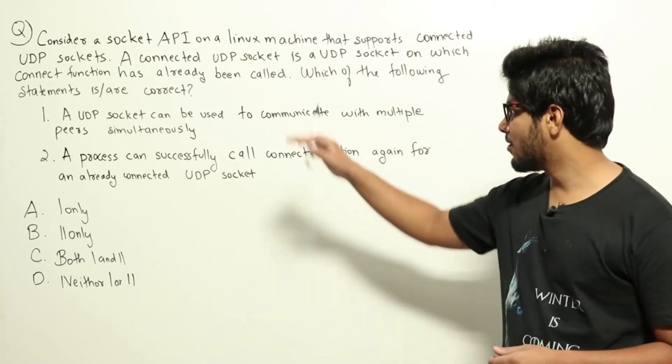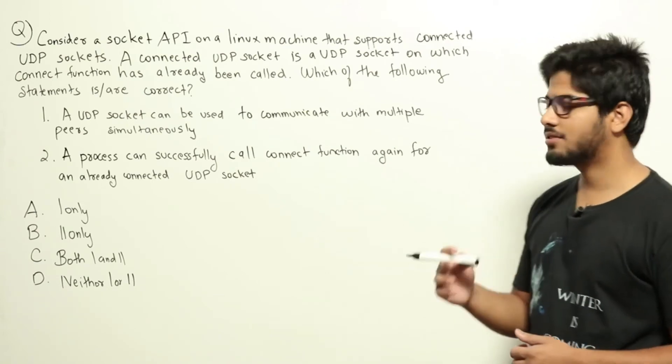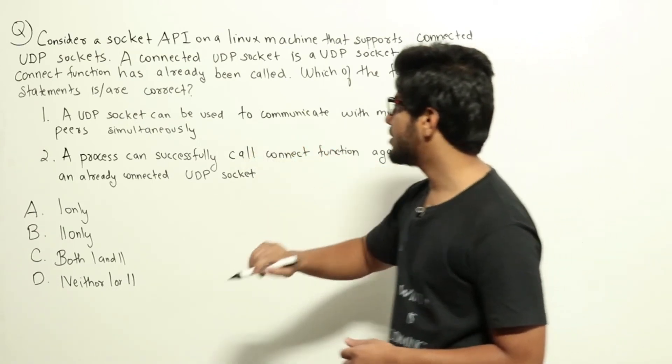So using one socket after calling connect on it, we can only use it to communicate with one peer only. We can't use it to communicate with multiple peers. So this statement is false.